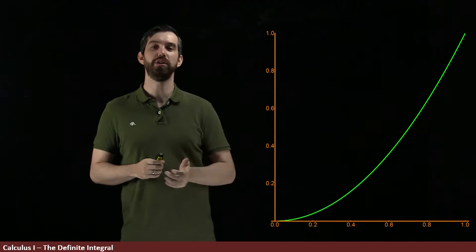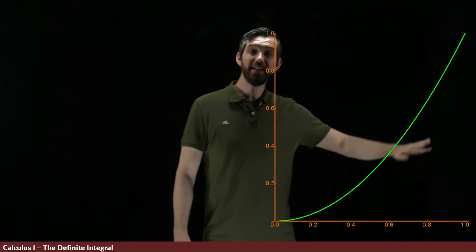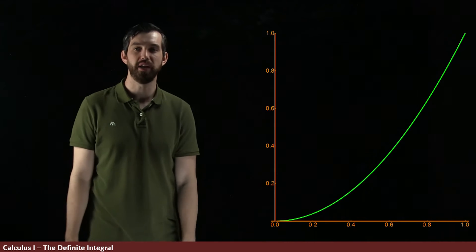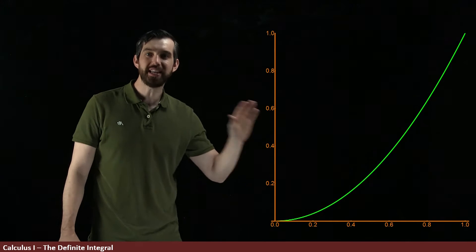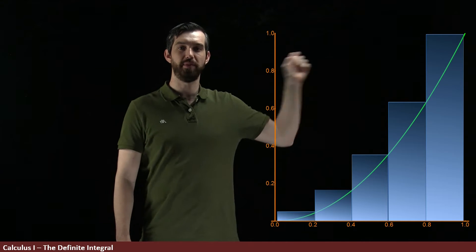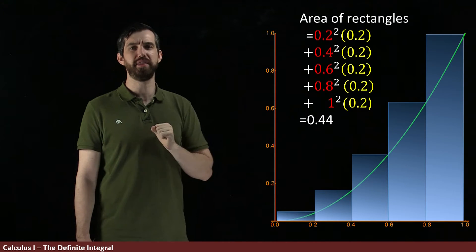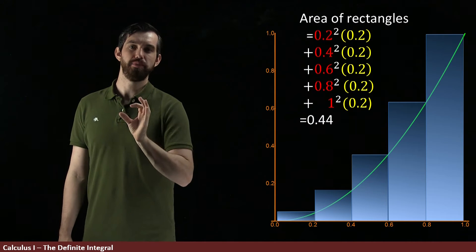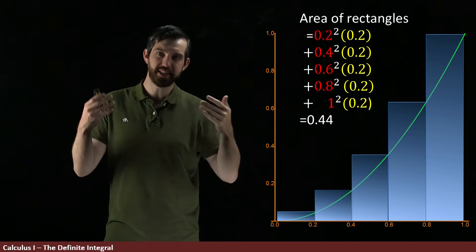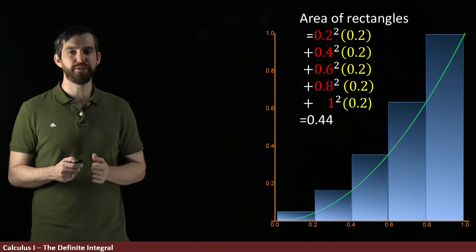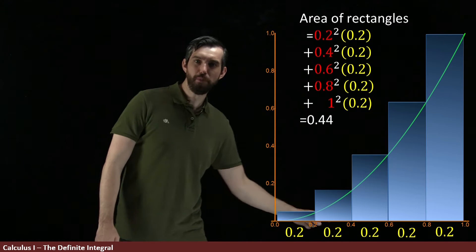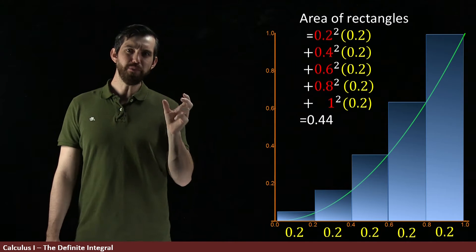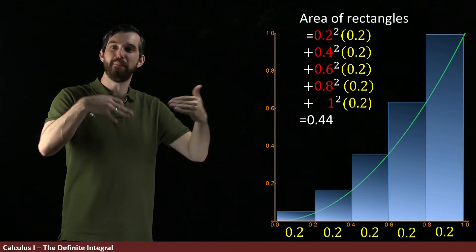Now let's return to the original area problem we've seen before. Our goal is to figure out the area underneath the curve x squared. The technique we had seen was to use a rectangle approximation — here the right rectangle approximation, adding up all the way along. We previously computed the area by summing these different rectangles and got the value 0.44. What I'd like to do now is represent what's going on here using summation notation. The widths are 0.2 everywhere in our sum, and I'm going to put this together as the sum of 5 things — a sum from 1 to 5.